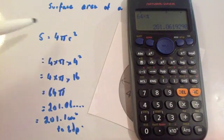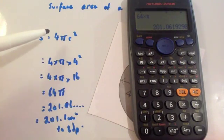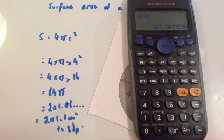Equals 201.06 or 201.1 cm squared to 1 decimal place. So simply the formula is given by 4πr². Just check the front of the exam paper, sometimes that's given for you.